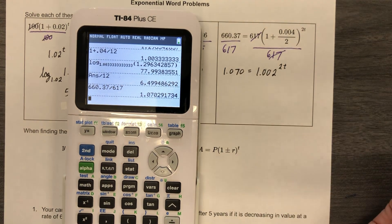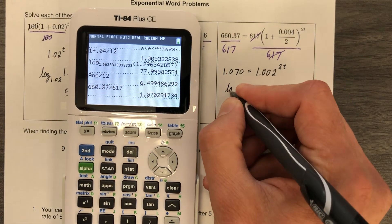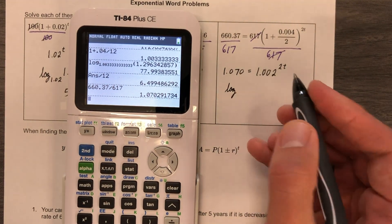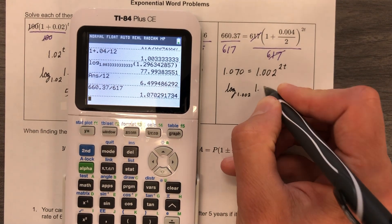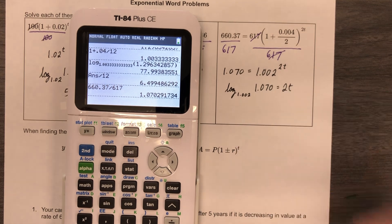Okay, this is ready to go into logarithmic form. Log base. Now, this is a little backwards than what we're used to, but there's your base, and then there's the other one. That's equal to 2t.